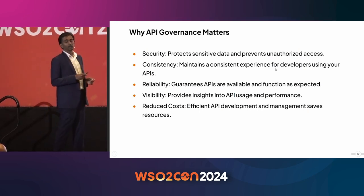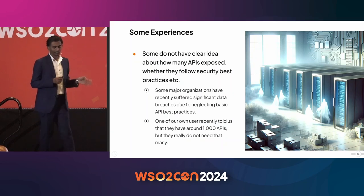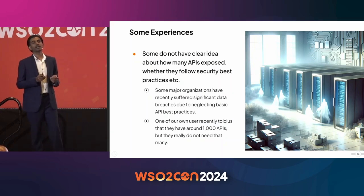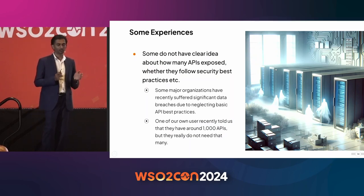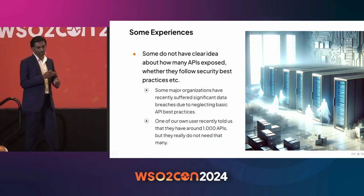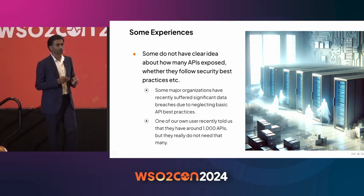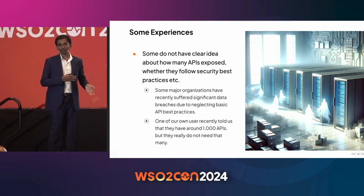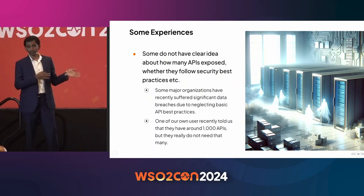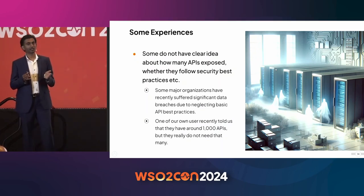Let me share some real-world governance experiences. We recently spoke with a user who had around 1,000 APIs in their environment but was pretty sure they didn't need that many. Over time, they'd developed so many APIs, but people and organizational structures changed while the APIs stayed. They didn't have a proper process to retire them, causing APIs to accumulate — some people didn't even know why certain APIs existed. We call these 'zombie APIs' or 'abandoned APIs.'